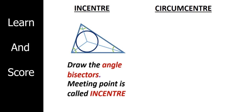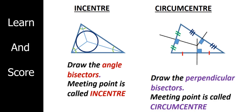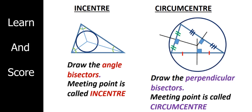Next is circumcenter. I drew a triangle, and here we have to draw the perpendicular bisectors. I have already uploaded a video on that and I will include the link in the description box. We have to draw three perpendicular bisectors, one for each side. The meeting point of all three perpendicular bisectors is the circumcenter of the triangle. Place the metal tip of the compass on the circumcenter and draw a circle — it will be outside the triangle and it will touch all the vertices of the triangle.